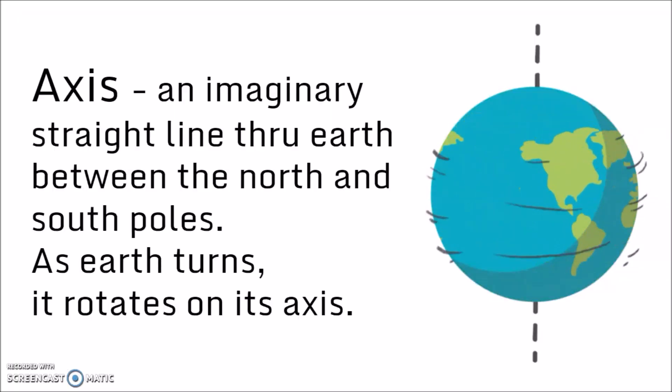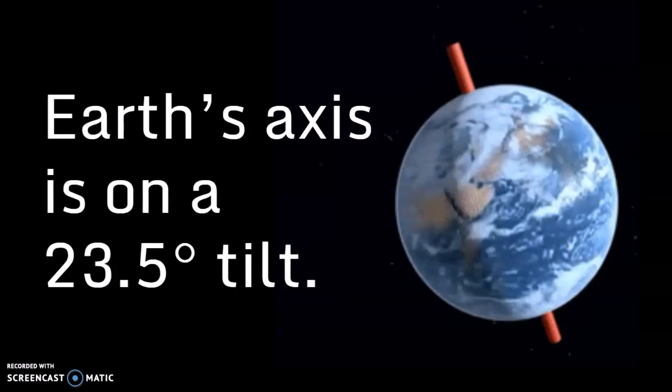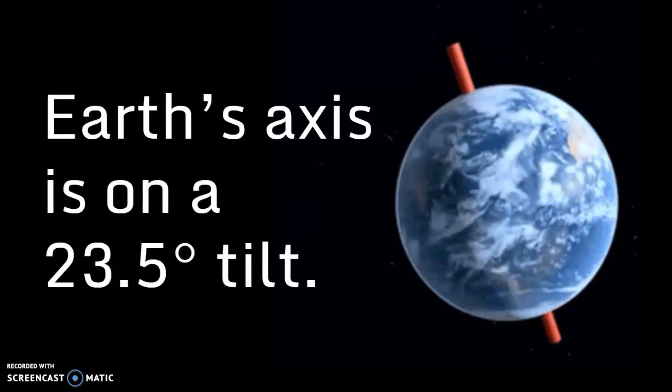Now, we said Earth is going to turn on its axis. The axis is an imaginary line that goes straight through the Earth between the north and south poles, and as Earth turns, it rotates on its axis. Like other planets, Earth travels around the Sun, and rotates while it travels.